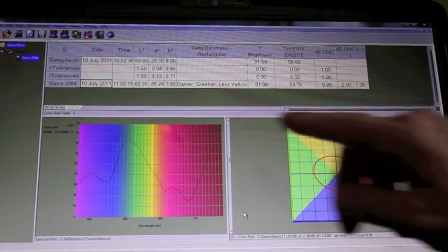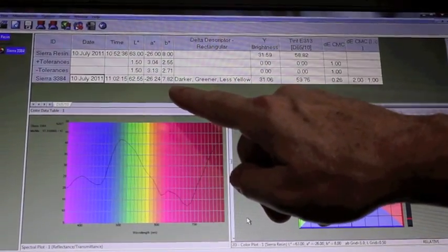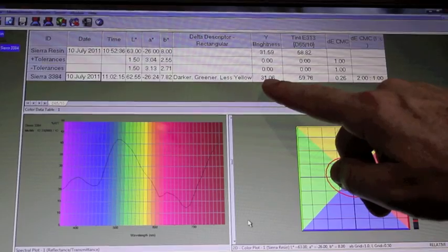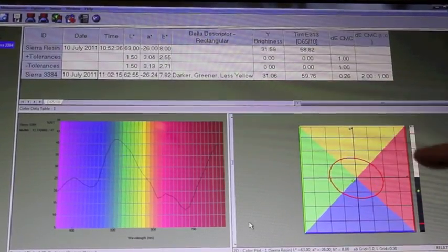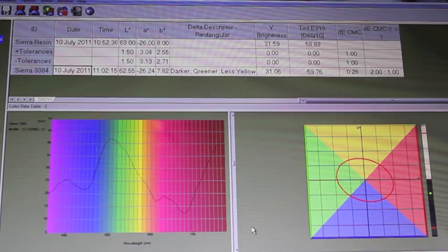Here we're comparing our sample against our standard and seeing that our LAB value is well within tolerance, a brightness value of approximately 31, and graphically showing it well within the tolerance plot.